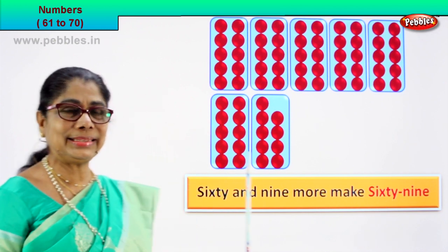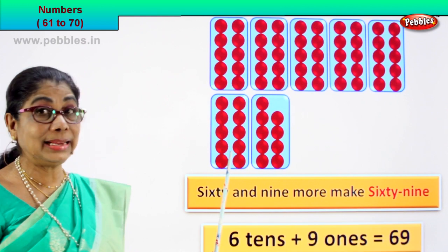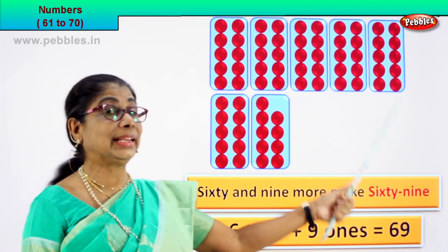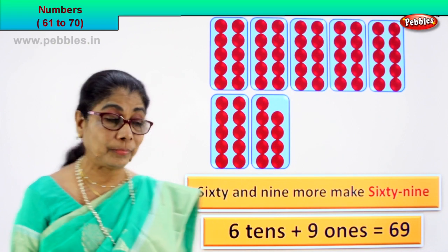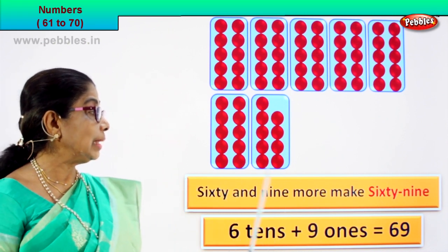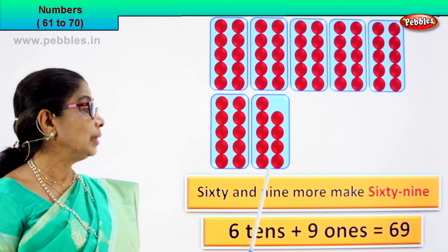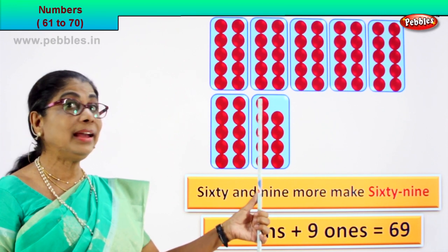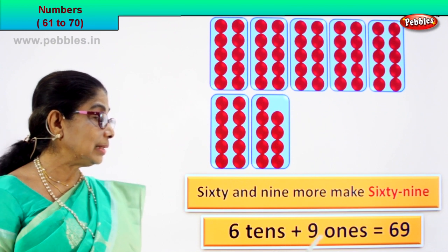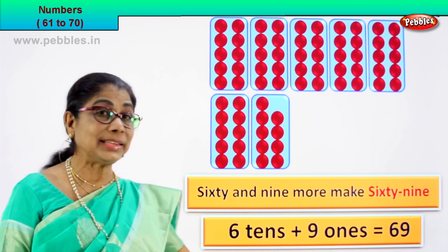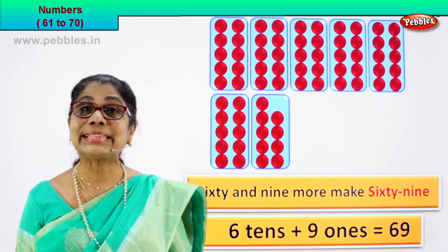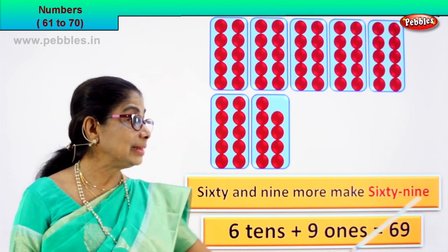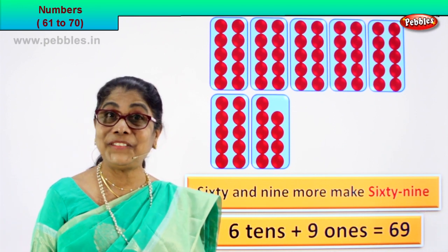What is sixty? Sixty is six tens. One ten, two, three, four, five, six — six tens. Six tens plus nine ones. One, two, three, four, five, six, seven, eight, nine. Six tens plus nine ones equal to sixty-nine. That's the number. What is its name? Sixty-nine.